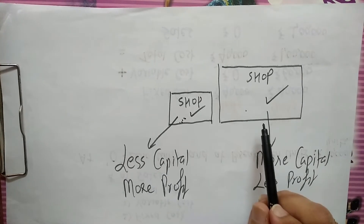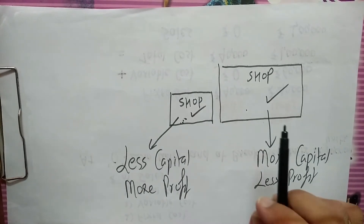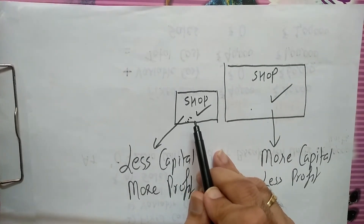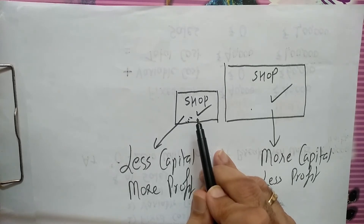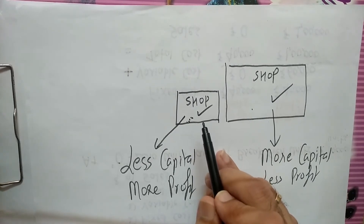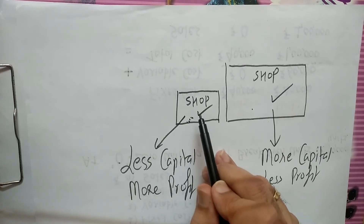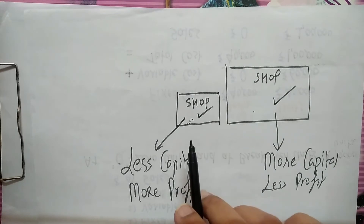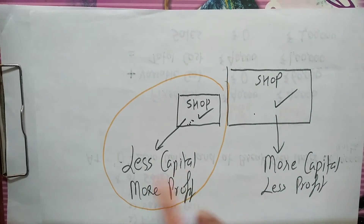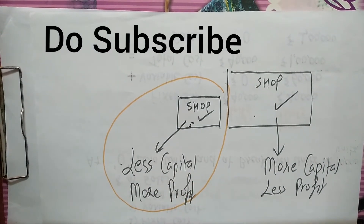How is it possible? Sir, iska dukan bada hai — it's a big shop, people will go there. Not necessary. This small shop may have goodwill. People trust this shop. They trust the honesty, integrity, sincerity of this shop. After-sales service must be superb. The goods delivered must be of A1 quality. So people know this shop very well and must be entering this shop to purchase goods. So the small shop has less capital employed, but the profit is more. It's very much possible.